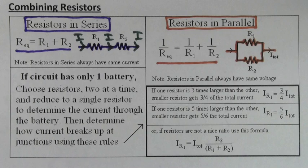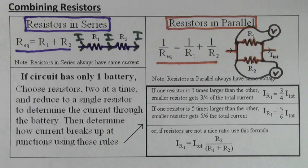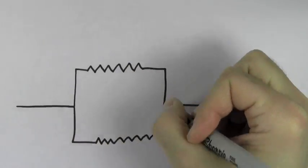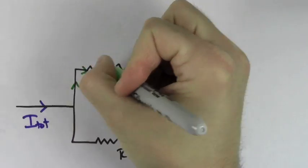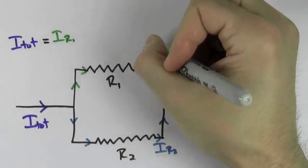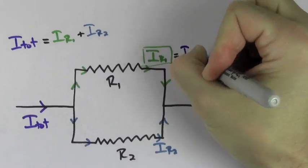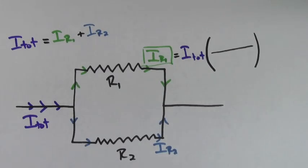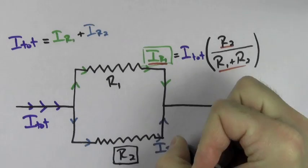Resistors in parallel have to have the same voltage because anything in parallel has to have the same voltage. If you have two resistors in parallel and a total amount of current flows into the junction, if the resistors have different values, each resistor will get a different amount of current. The total amount of current that flows into the junction has to equal the current through R1 plus the current through R2. The current through R1 is going to equal the total current times the ratio of R2 over R1 plus R2.